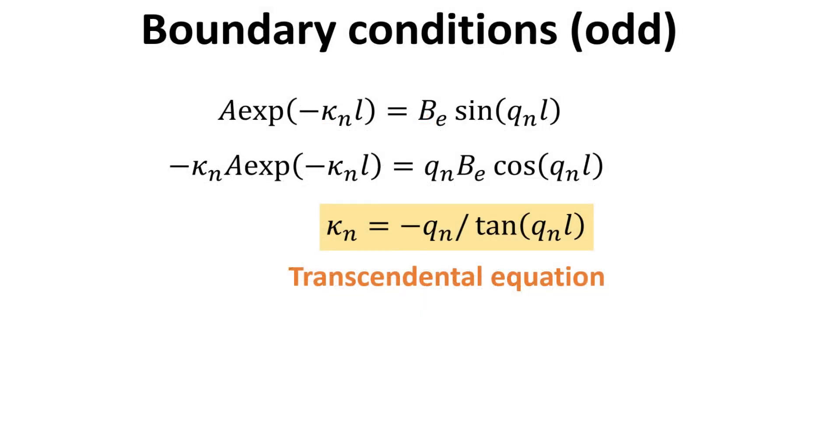Collecting the two boundary conditions and dividing one with the other, we then arrive at an equation relating the variable κ to q. This transcendental equation is clearly different from that for the even case.